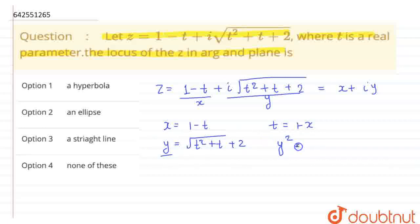So, I can write y squared equals t squared plus t plus 2. So, let's put the value of t. t equals 1 minus x whole squared, 1 minus x whole squared plus 1 minus x plus 2. Clear up to now?